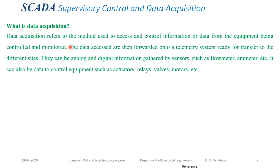This data is sent through the telemetry system, which may be a wired system or a wireless system. For a wired system, we use Ethernet cables — that may be Cat5 or Cat6 cables to transfer the data. For a wireless system, we use ZigBee or radio to transfer the data from one location to another.